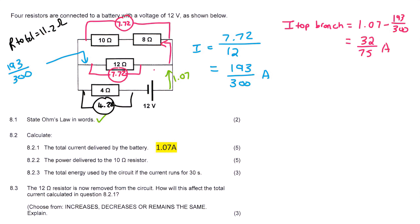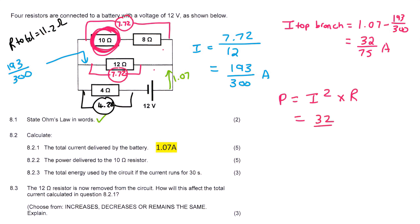Now I know how much current is flowing through the 10 ohm resistor — it's 32/75 amps. So I can use the power formula P = I²×R. I put 32/75 in brackets and square it, multiply by the resistance of 10, and that gives us 1.28 watts.